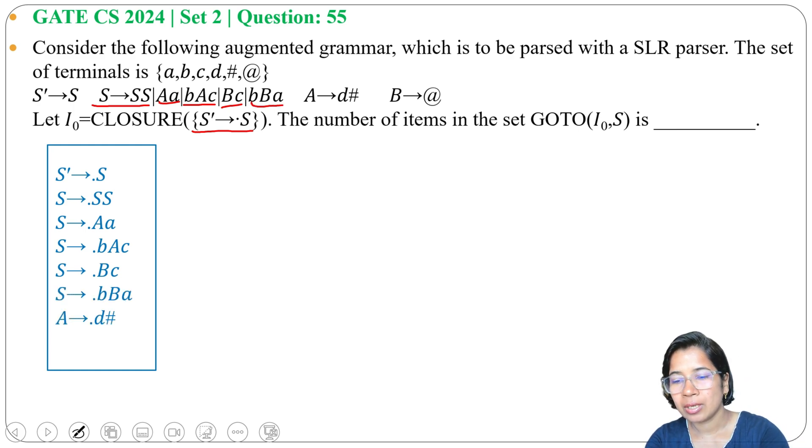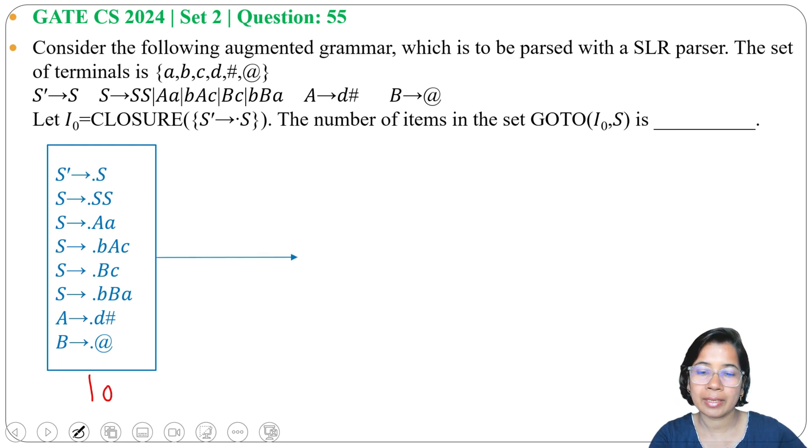all S productions are done. As here dot is before A, we need to write A production: A → •d#. As dot is before B, we need to write B production: B → •@. So this is our I₀. Now from I₀ by S we will go to another state. We need to find